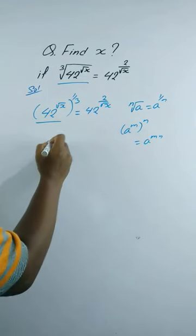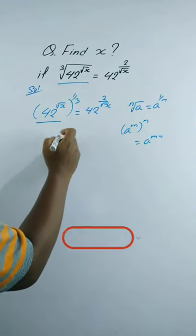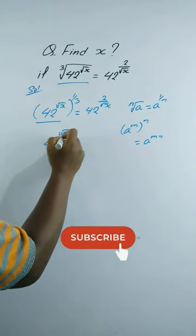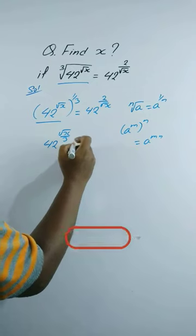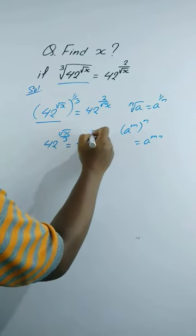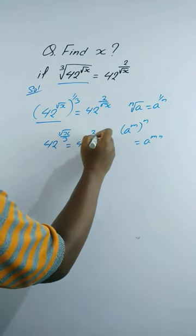So we can write this as 42 to the power square root x by 3, is equal to 42 to the power 2 by square root x.